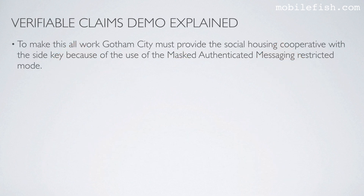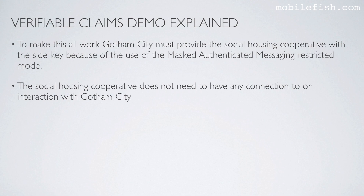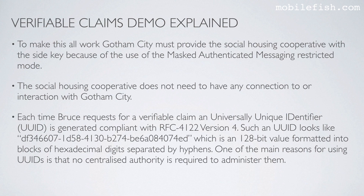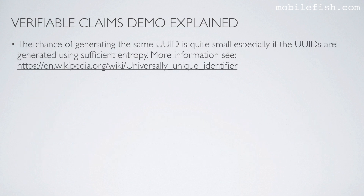To make this work, Gotham City must provide the Social Housing Cooperative with the side key because of the use of mass-authenticated messaging restricted mode. The Social Housing Cooperative does not need any connection to or interaction with Gotham City. Each time Bruce requests a verifiable claim, a universally unique identifier called UUID is generated, compliant with RFC 4122 version 4. A UUID is a 128-bit value formatted in blocks of hexadecimal digits separated by hyphens. No centralized authority is required to administer them, and the chance of generating the same UUID is quite small, especially if generated using sufficient entropy.